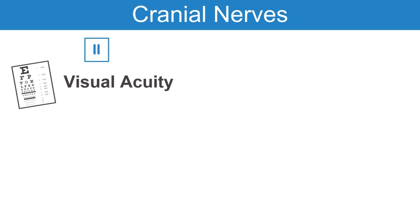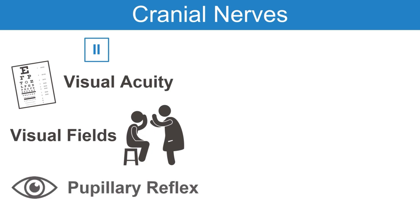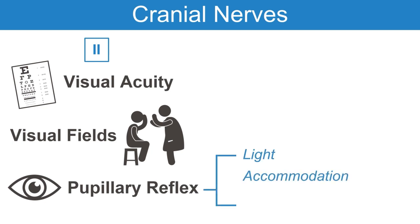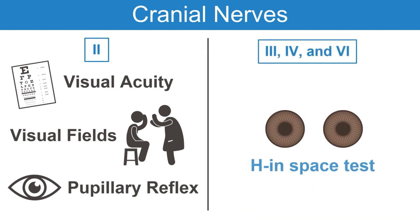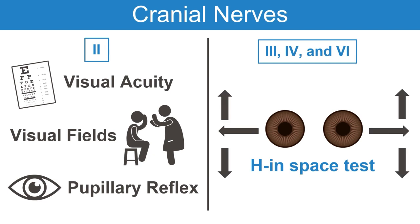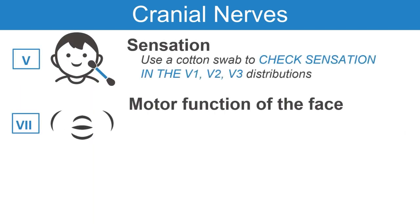Next, evaluate the cranial nerves. Start by checking visual acuity in each eye with the near card or Snellen chart, and visual fields by confrontation in each eye independently with finger count or a red object. Then evaluate the pupillary light reflexes — check for pupillary response to light, accommodation, and evaluate for relative afferent pupillary defect.